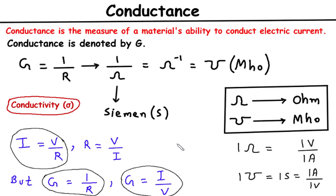In parallel circuits, the total conductance is the sum of the individual conductances. This is similar to how resistances combine in series circuits. Understanding conductance in series and parallel circuits is crucial for analyzing and designing electrical circuits.